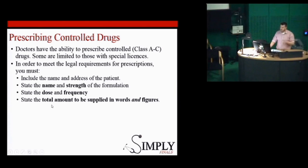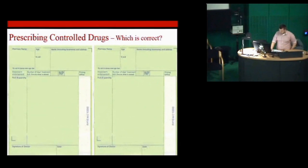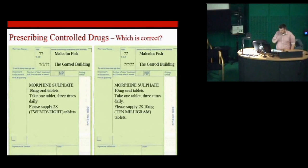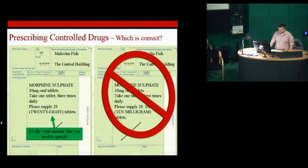The thing that separates controlled drugs from others is stating the total amount to be supplied in words and figures. This is more relevant when you're discharging a patient home — FP10s, TTAs and things. It's the total amount that you want the pharmacist to give that patient to take away with them that you need to specify in words and figures. The BNF also puts in this more philosophical point that we all have a duty not to prescribe these unnecessarily because of the addiction risk.